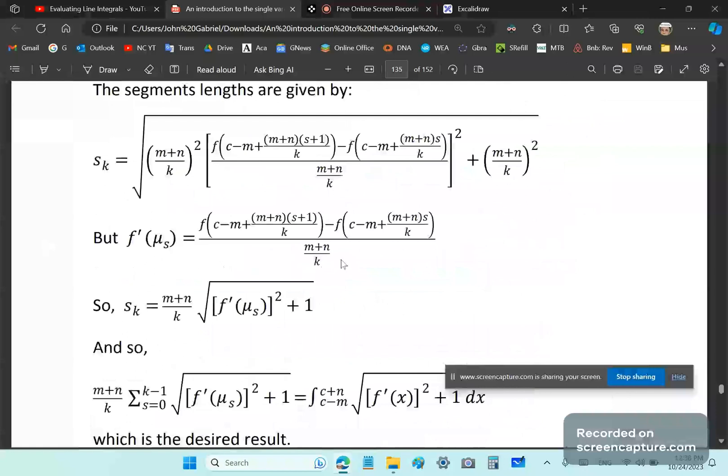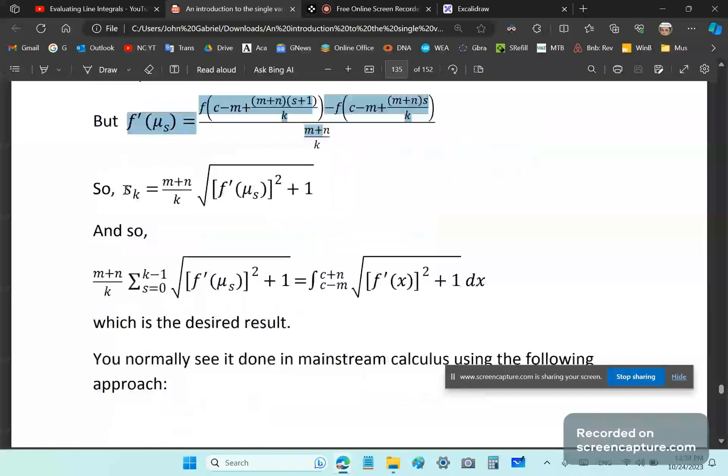And what does this happen to be? It happens to be the derivative for mu sub s and it gives you the arc length formula. Isn't that incredible?